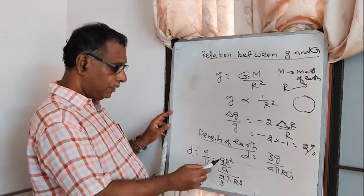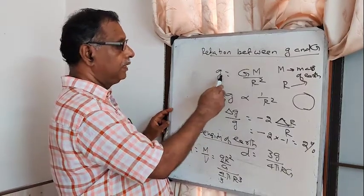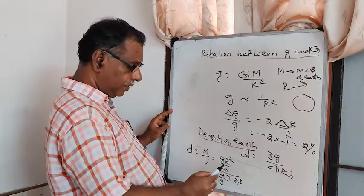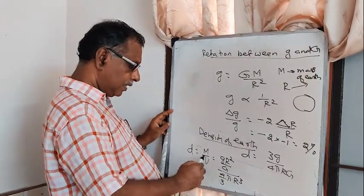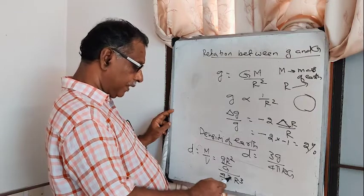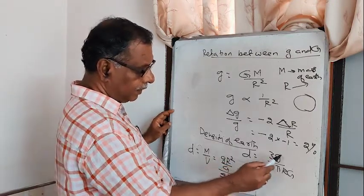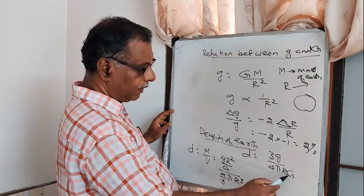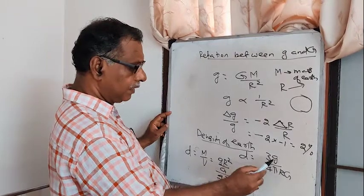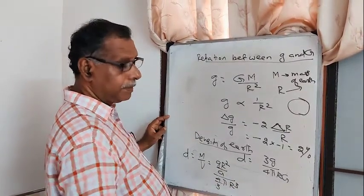The density of the earth D equals mass divided by volume. Using g = G·M/R² to express M, and volume = (4/3)·π·R³ for a sphere, solving gives: D = 3g / (4·π·G).